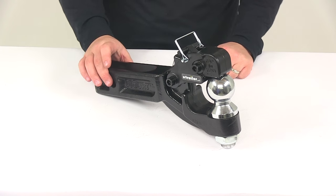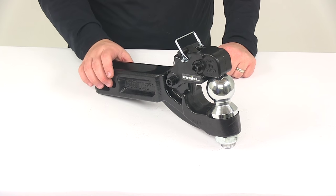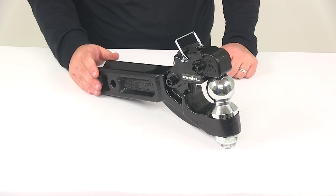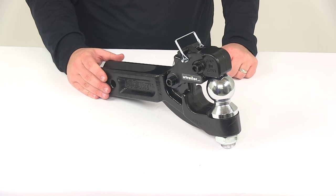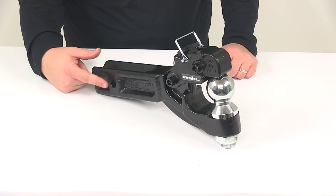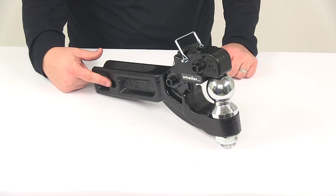Now to get this secured inside of your hitch, it does require a hitch pin and clip or a hitch lock. Those items are sold separately. If you're in need of one, you can find them right here at eTrailer.com. The pin hole diameter here on the shank measures five-eighths of an inch.